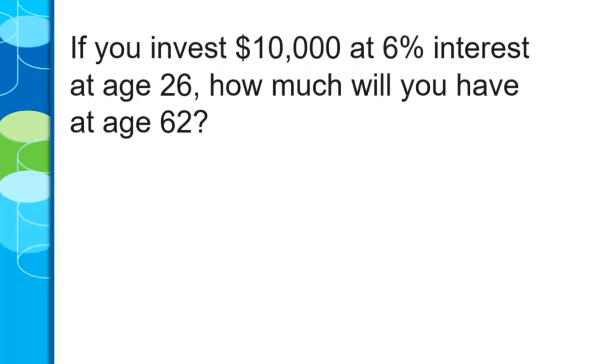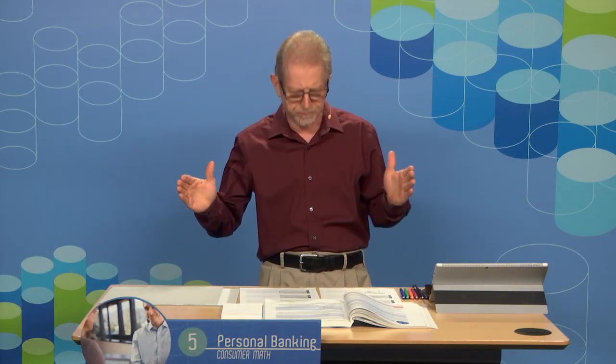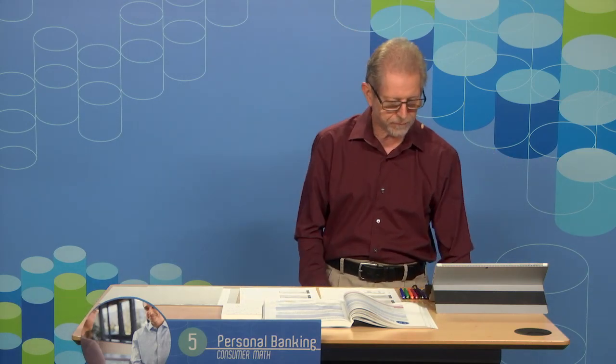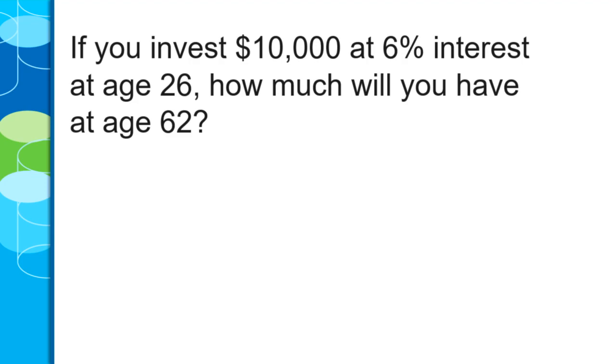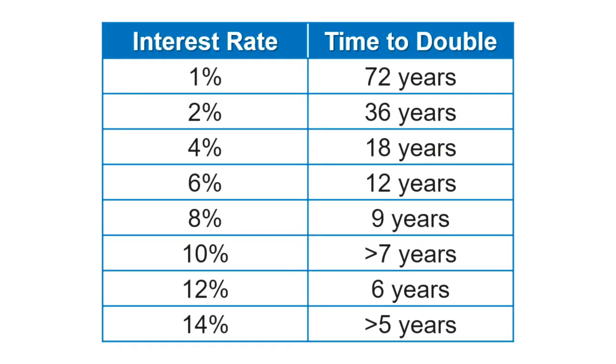How much will you have at 62, the old retirement age? From 26 to 62 is 36 years. In 36 years, how many doubling periods do we have? It's 6% interest, and 72 divided by 6 is 12 years per doubling. So that means we're doubling three times — 36 divided by 12 equals three doubling periods.